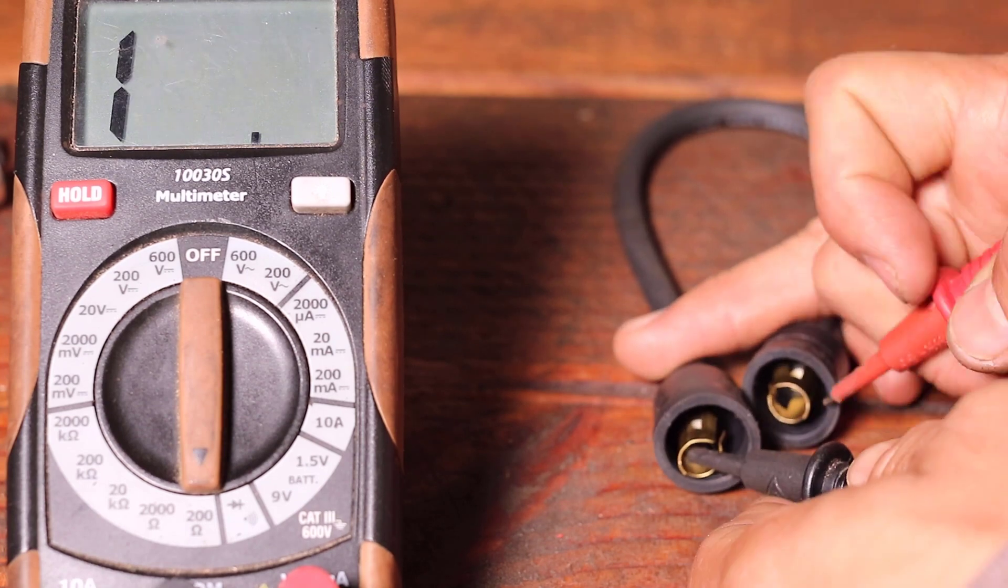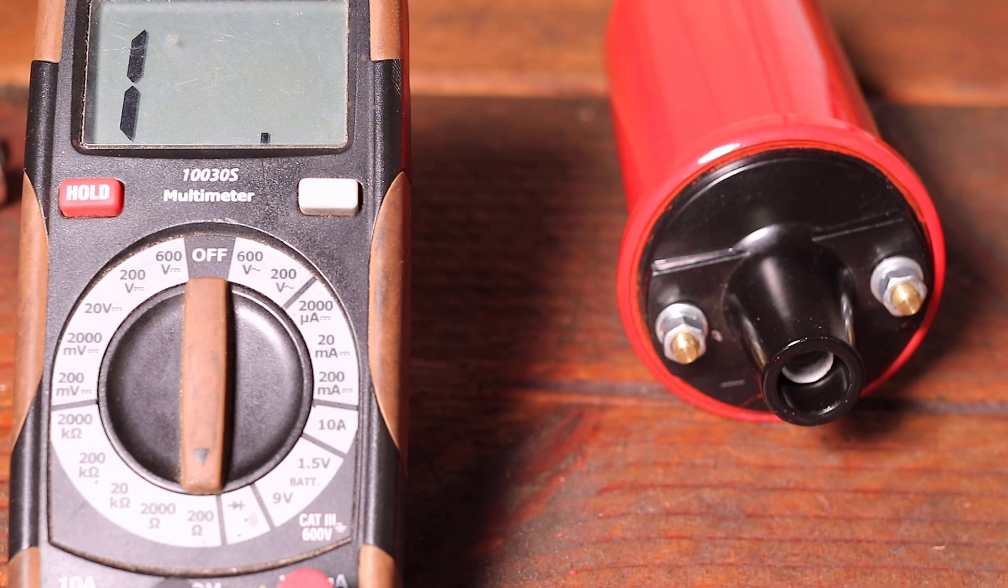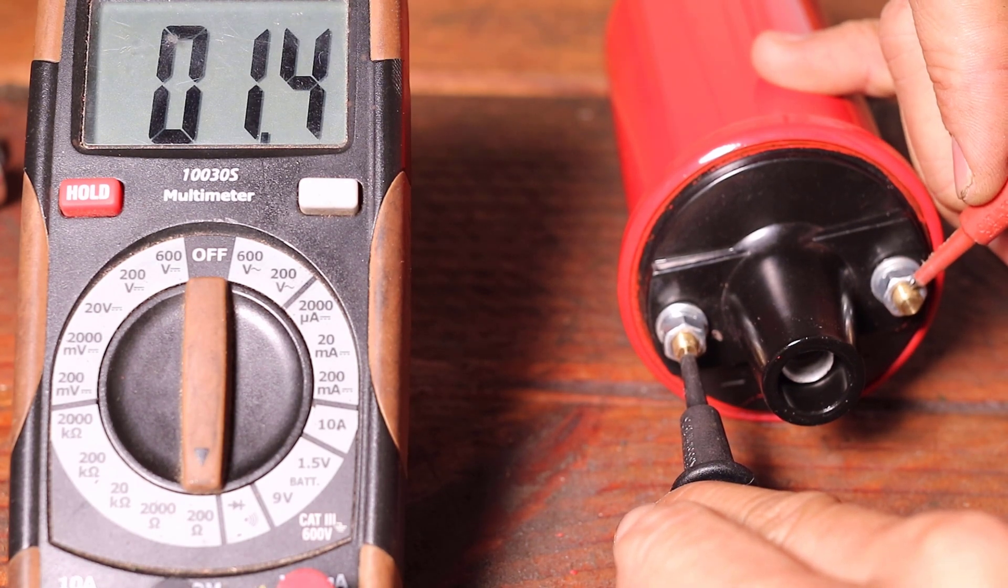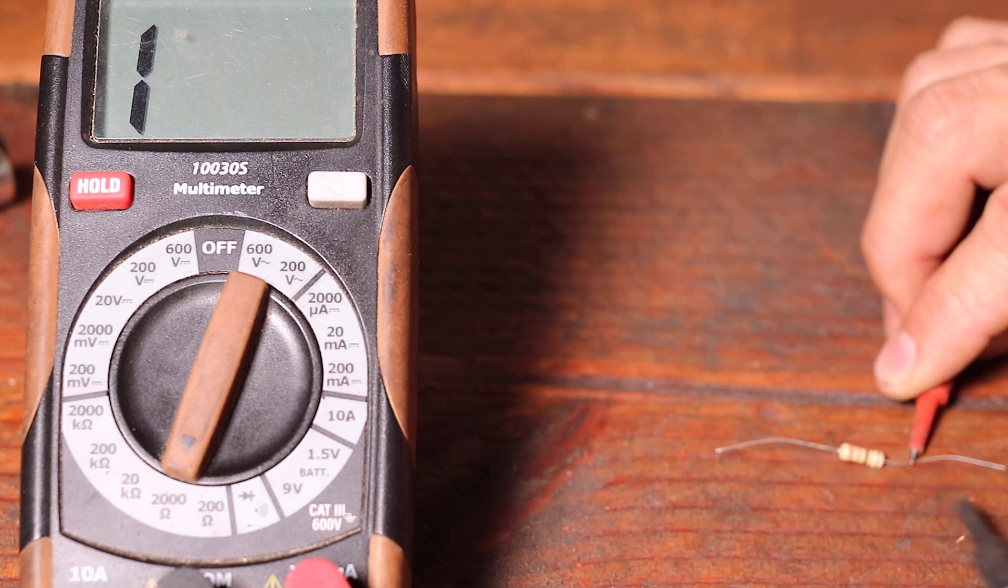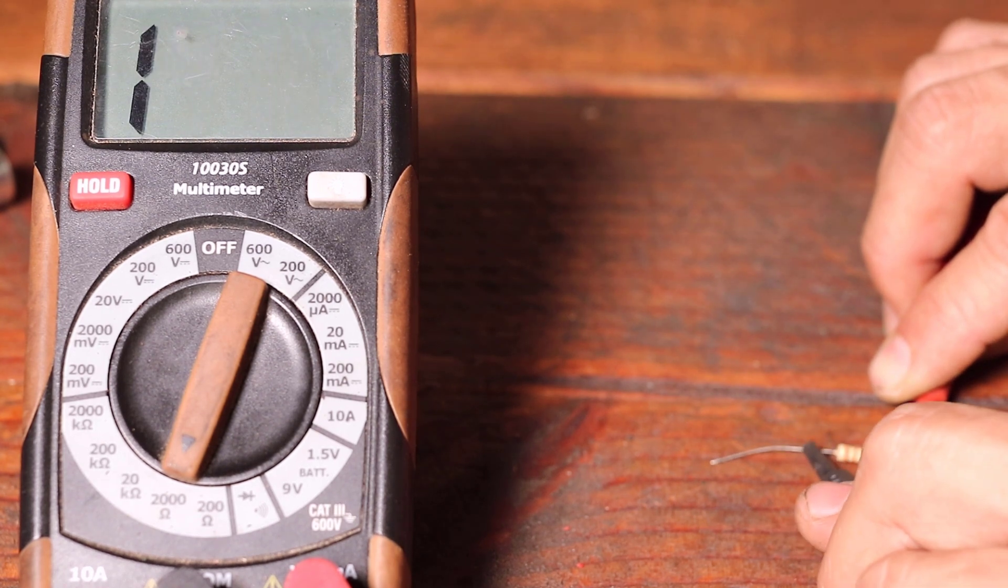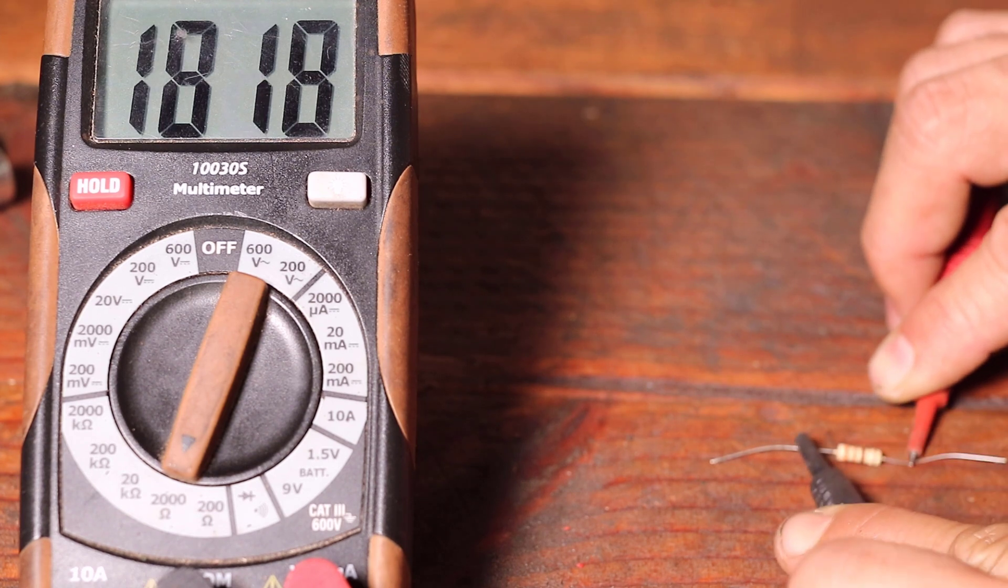You can also use a multimeter to measure resistance in spark plug wires. You can also use the multimeter to measure resistance in an ignition coil. In electronics there are components called resistors. Resistors specifically are made to resist or restrict the flow of electricity. You can also use a multimeter to measure resistance in a resistor.